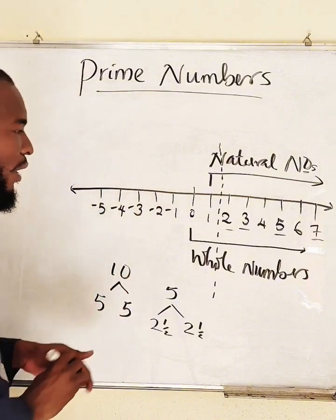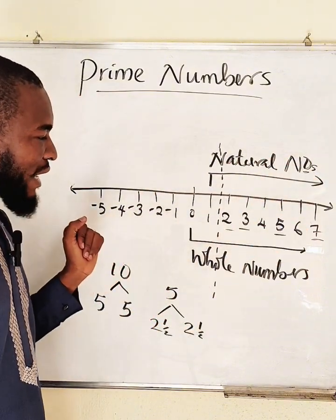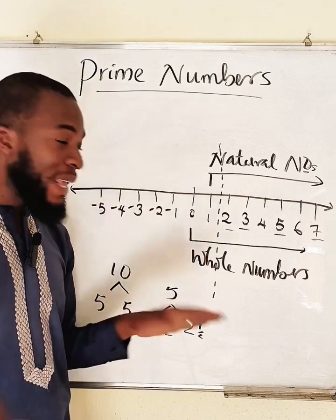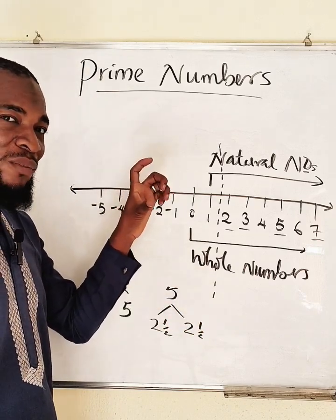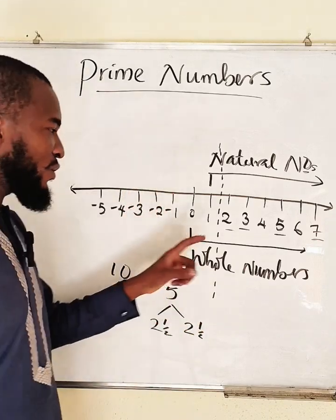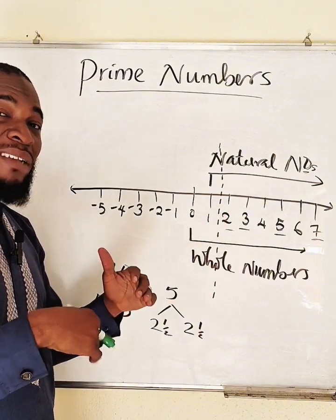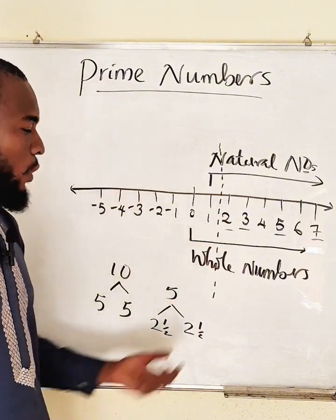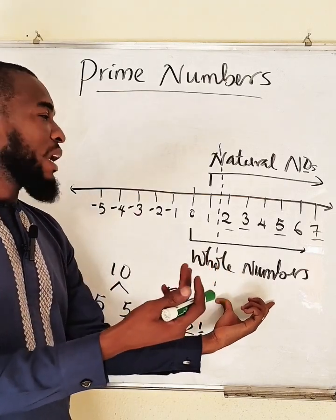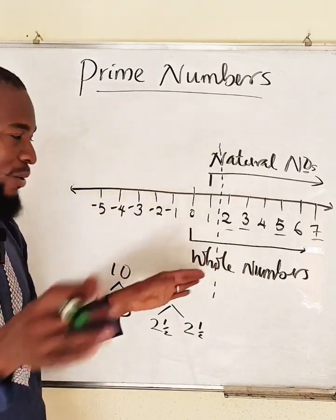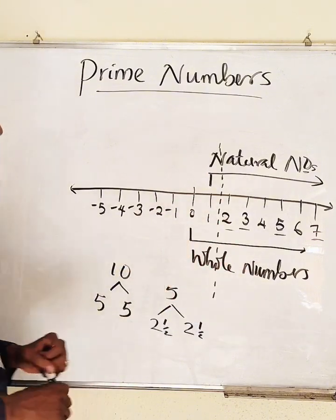So: natural numbers greater than one that cannot exactly be divided by any other number — or more precisely, that cannot be divided by any natural number except one and itself. You can also say it is a whole number greater than one that cannot be exactly divided by any other whole number except one and itself.